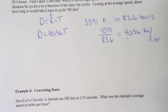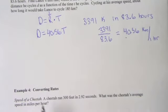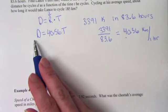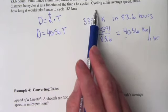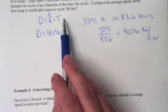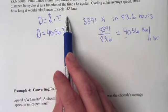So that gives us a rule that we can use. We can plug in any time we want and we should be able to know what his distance is. So if you look at part B on the question, it says cycling at his average speed about how long would it take Lance to cycle 185 kilometers?